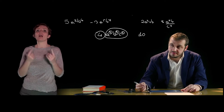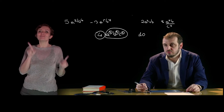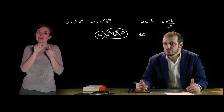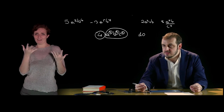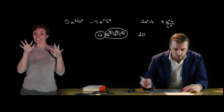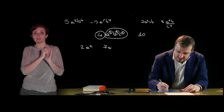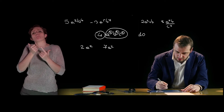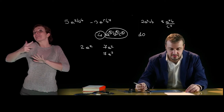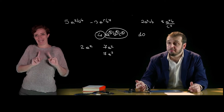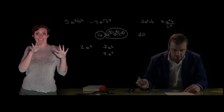Per parlare delle operazioni tra i monomi dobbiamo innanzitutto andare a definire, un po' come abbiamo fatto anche per i radicali, quello che vuol dire monomio simile. I monomi sono detti simili se hanno la stessa parte letterale: quindi 2a alla seconda è un monomio simile a 7a alla seconda, ma non a 7a alla terza, che sono caratterizzati da parti letterali differenti. I monomi opposti sono monomi simili che hanno un coefficiente opposto, con segno opposto.